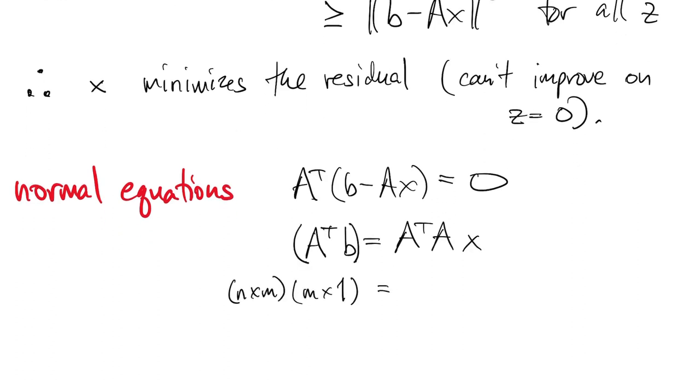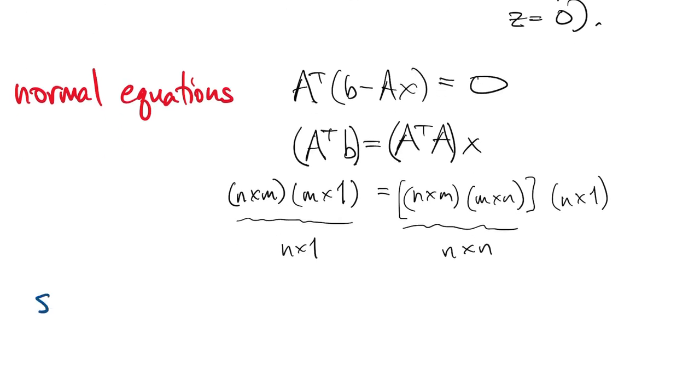And if we use associativity, then this thing on the left is just an n by one vector. And this matrix is just an n by n matrix. So the normal equations are really a square n by n linear system of equations for x.